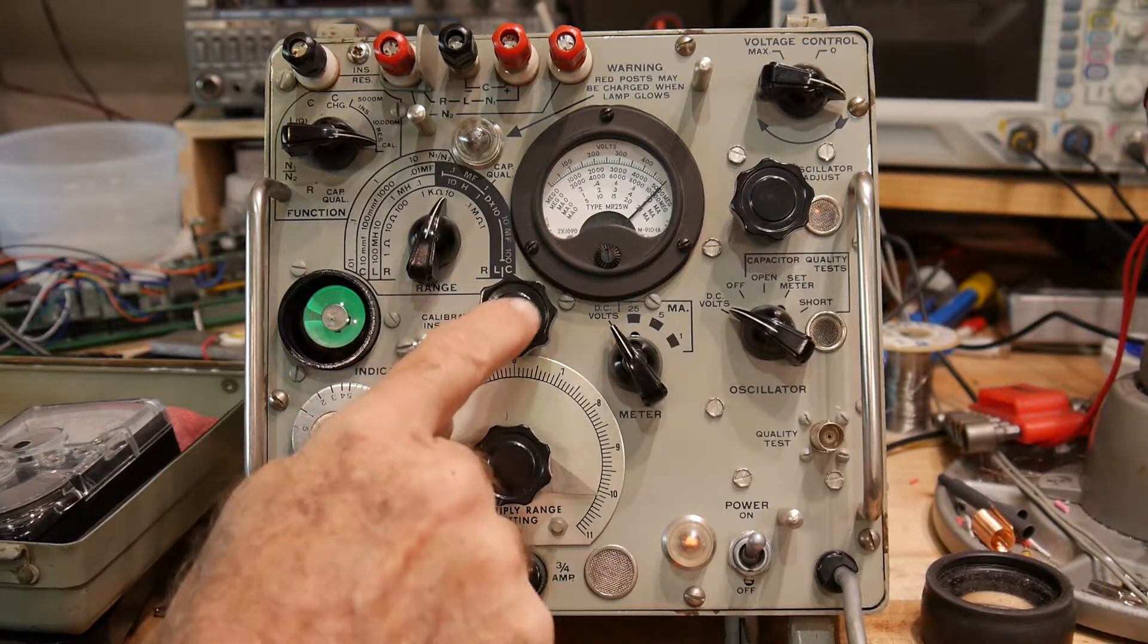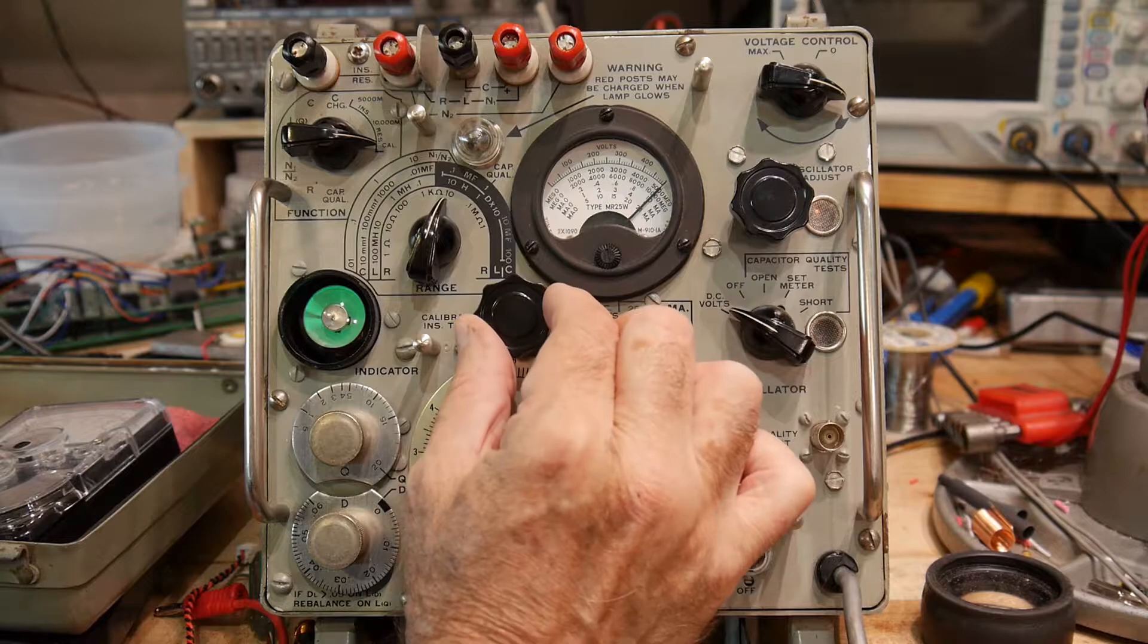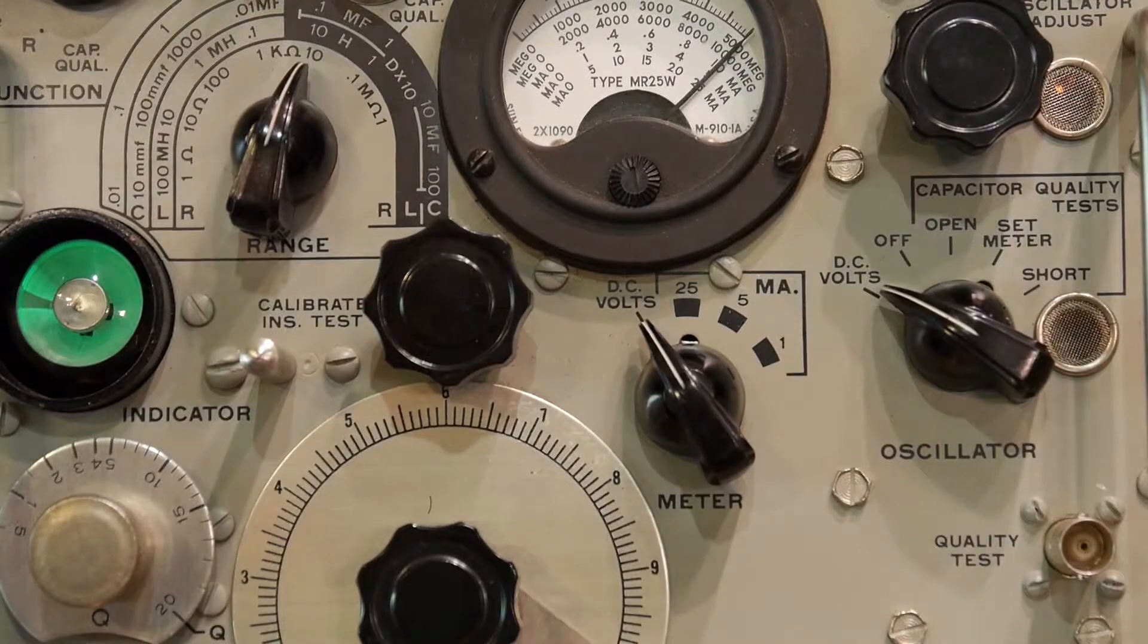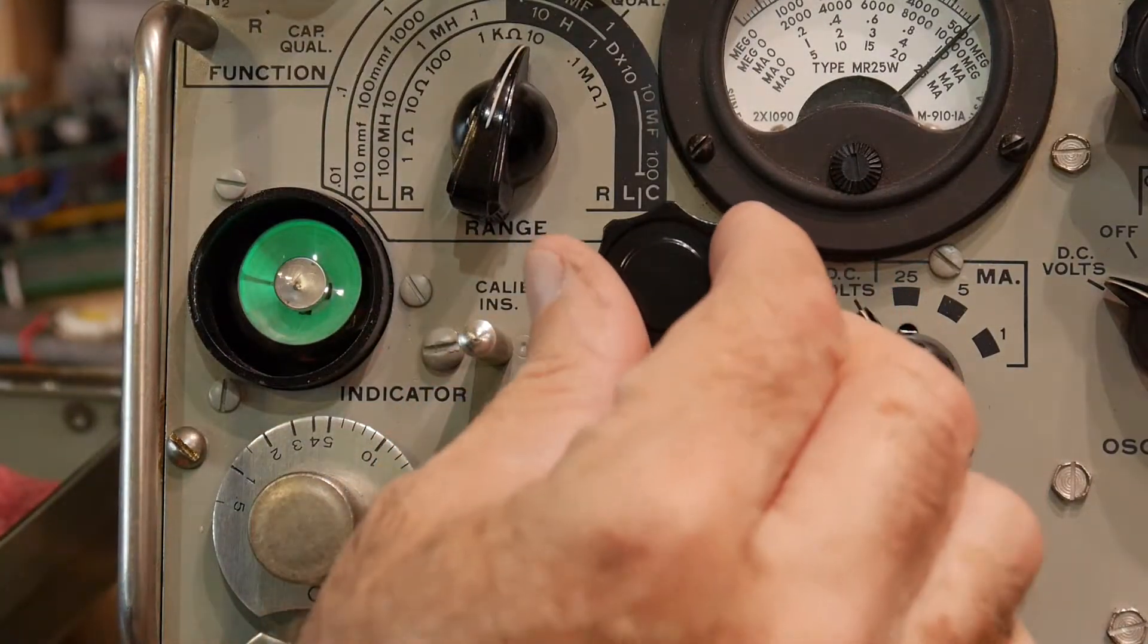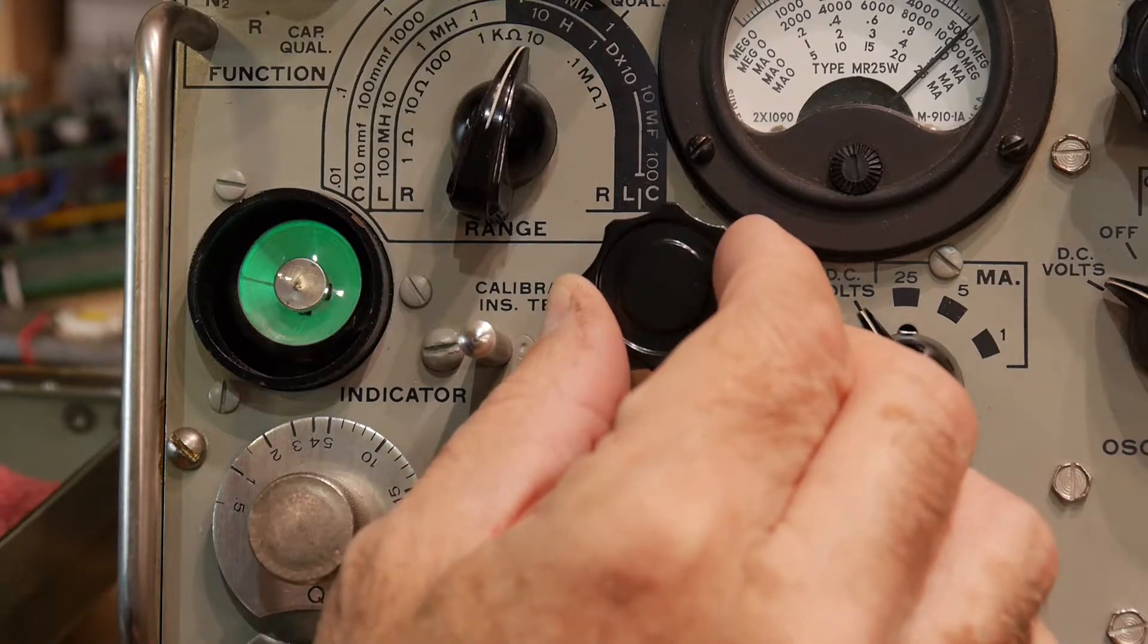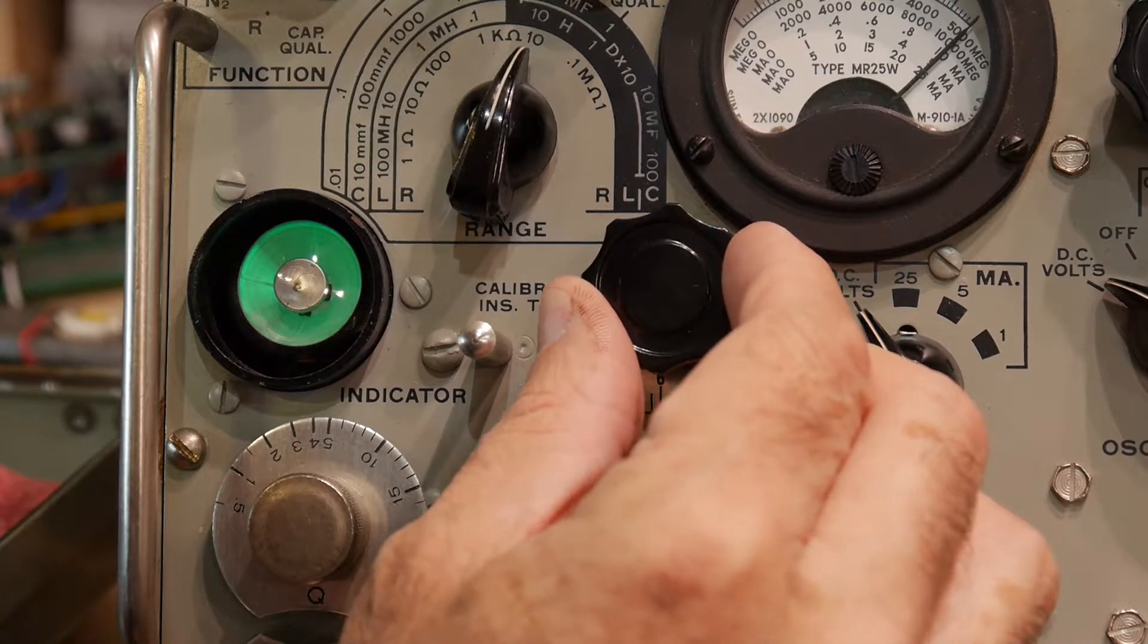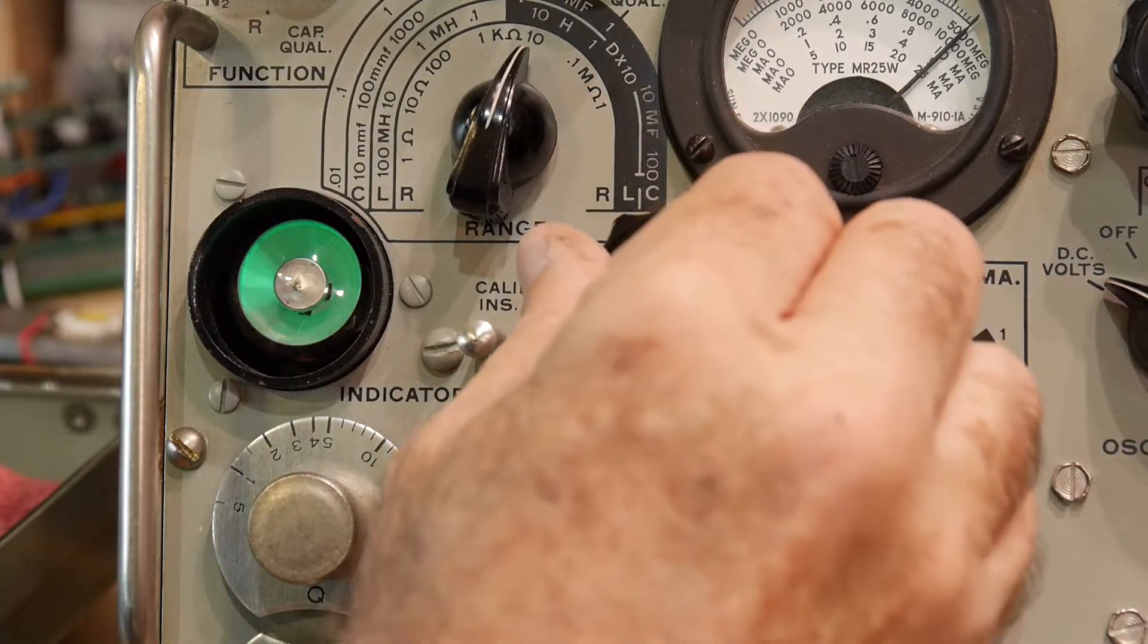You can see that we can turn the calibrate insulation resistance test and make the little eye tube go in and out. Let me zoom in on that a bit. As we turn this knob, you can see it changes, so you set it so that it just closes.